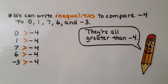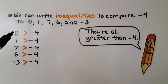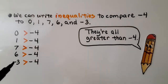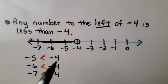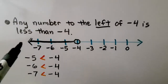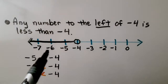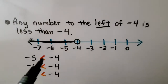We can write inequalities comparing negative four to zero, one, seven, six, and negative three. Zero is greater than negative four, one is greater than negative four, and so are seven and six. Negative three is also greater than negative four — they're all greater than negative four. Any number to the left of negative four, such as negative five, negative six, or negative seven, is less than negative four.